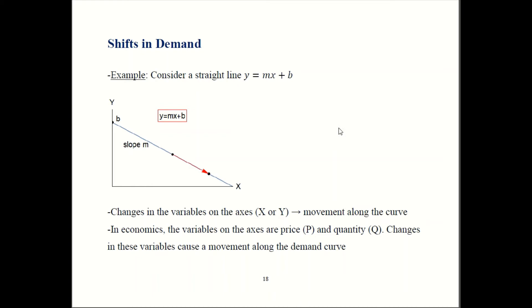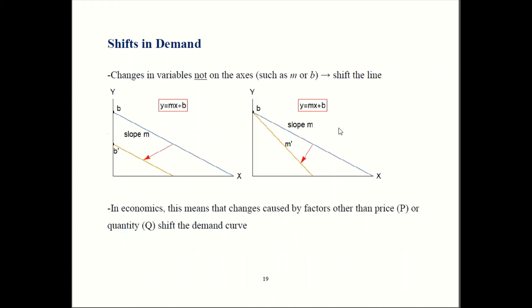Now if you change a variable that is not on the axes, that's when you get shifts. In our equation for a line, y equals mx plus b, x and y are on the axes. So those other two variables, m and b, are not. So if I change m or change b, that gives me a shift.